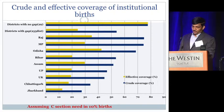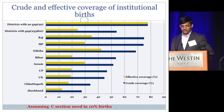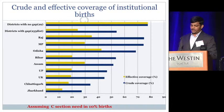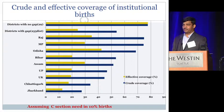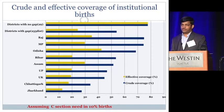Assuming a c-section need of 10% of births rather than the more conservative estimate of 5%, we found only 29 districts — around 10% of districts — had equal effective and crude coverage. In the remaining 90% of districts (255 districts), there was a gap of 30 percentage points between the two, meaning more than half of mothers delivering in health facilities did not have access to EMOC. The gap is highest in provinces showing sharp increases in institutional births after JSY.